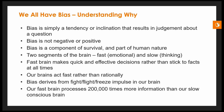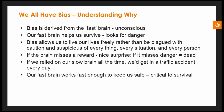Our brains act fast rather than rationally. The fast brain dominates unless you take the time to engage the slow brain, and bias actually derives from the fight-flight-freeze impulse. Our fast brain processes two hundred thousand times more information than our slow conscious brain, trying to filter out what's important. Bias is what allows us to live our lives freely rather than be plagued with caution and suspicious of every situation and every person. Ross gave an example of walking across a floor in a high rise — we expect the floor is going to prevent us from falling.